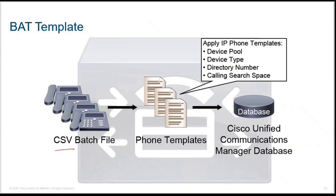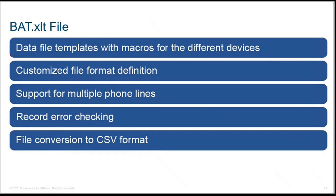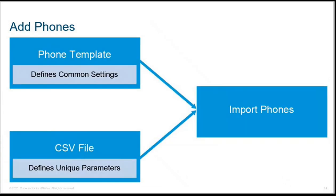The BAT template is in CSV format — a CSV batch file providing a phone template or user template based on what you need to add. You provide information such as device pool, device type, directory number, calling search space, and so on, and upload it to the CUCM database. The data file templates with macros support different devices in a customized file format. Multiple phone lines can be added for the same phone, error checking is supported, and file conversion to CSV format is supported. To add phones, you need a phone template defining common settings and a CSV file defining unique parameters.